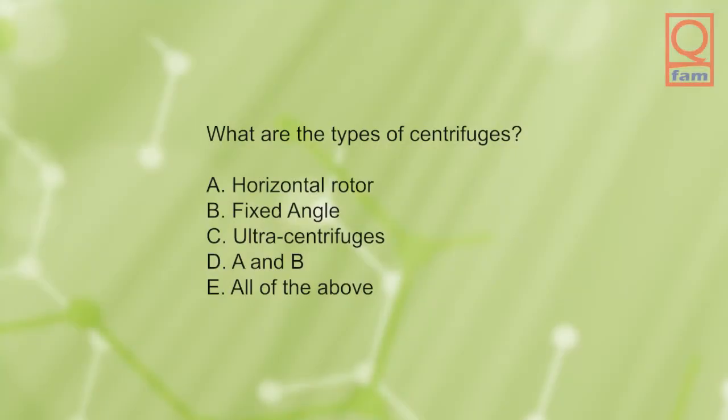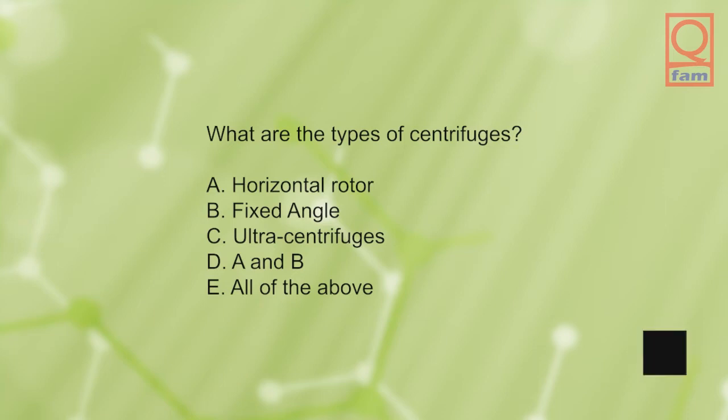What are the types of centrifuges? A) horizontal rotor, B) fixed angle, C) ultracentrifuges, D) A and B, E) all of the above. The answer is E, all of the above.